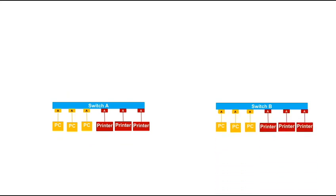The same scenario is on switch B. The PCs on switch A cannot communicate with the PCs on switch B because there is no link. For that matter, we configure a port on switch A as a trunk port and similarly on switch B, and we connect the trunk ports to each other. The trunk port can carry the traffic of multiple VLANs — in this case, the traffic of PC VLANs as well as printer VLANs. So the PCs on different switches can communicate with each other and the printers on these two switches can communicate with each other, but the PCs and printers still cannot communicate since they are in different VLANs.